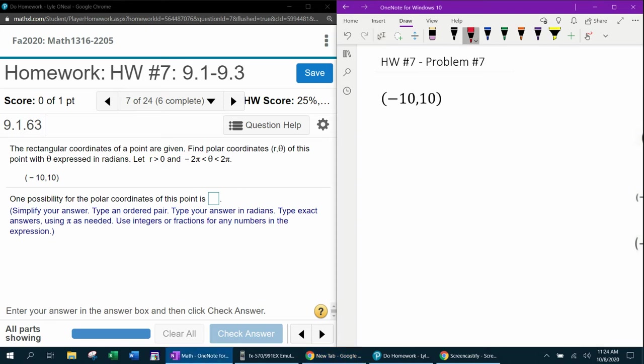First things first, rectangular coordinates are given, that means we're given an x and a y. We want to convert that into polar coordinates, which means we're looking for r and theta.